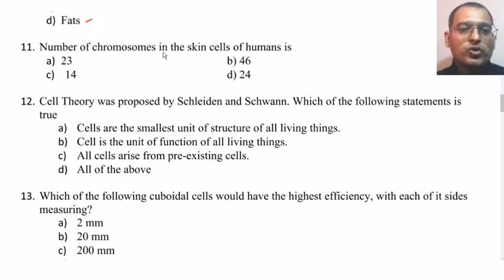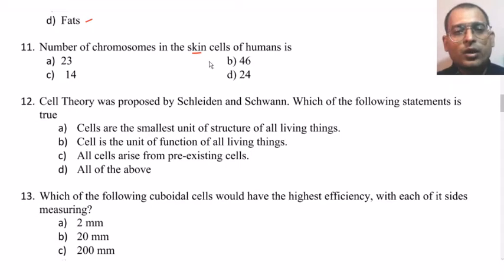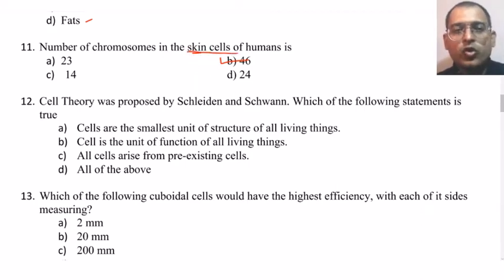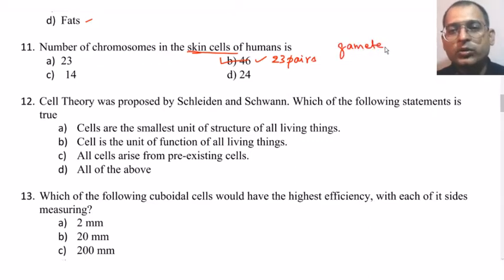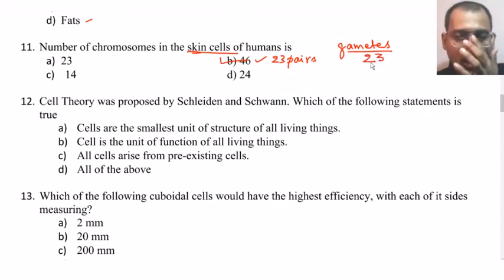The number of chromosomes in the skin cells of humans is 46. Skin cells are normal somatic cells — any cell other than reproductive cells or gametes will have 46 chromosomes, which is 23 pairs. In the case of gametes, there are only 23 chromosomes — half the number.